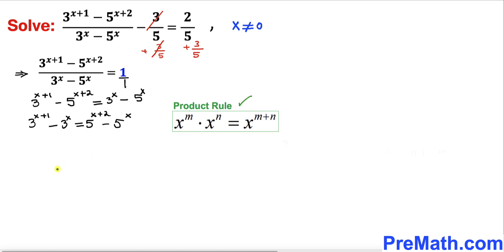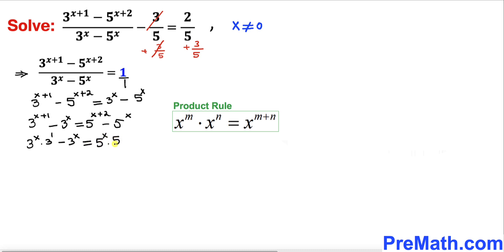Now let's recall the product rule of exponents. We're going to apply this rule on 3^(x+1) and 5^(x+2). The left hand side can be written as 3^x · 3^1 - 3^x, and the right hand side as 5^x · 5^2 - 5^x.